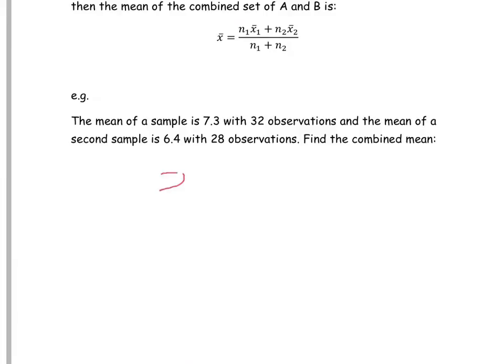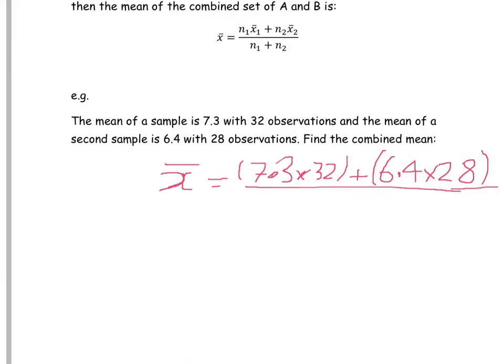So we're going to use the rule that we've highlighted above. So our mean is going to be our first one, 7.3 times by 32, plus our second one, which is going to be 6.4 times by the number of observations, which is 28, divided by the total number of observations, which is 32 plus 28.